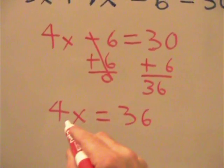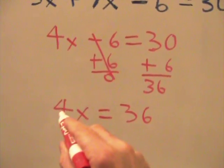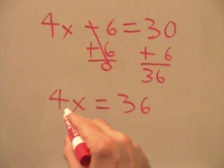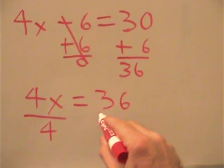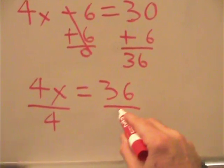Now the only way to isolate the x is to divide both sides by 4. So we're going to divide this side by 4, divide this side or 36 by 4.